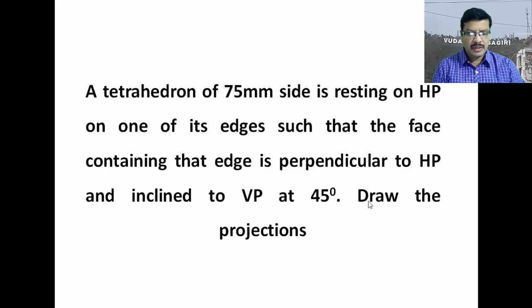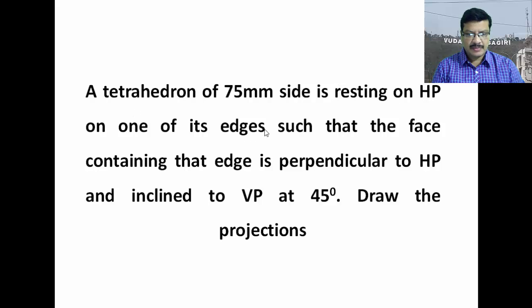In this tutorial, I will explain a tetrahedron problem. The problem is something like this: a tetrahedron of 75 mm side is resting on the HP on one of its edges such that the face containing that edge is perpendicular to the HP and inclined to VP at 45 degrees. Draw the projections.